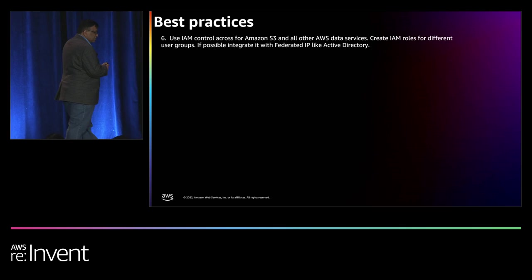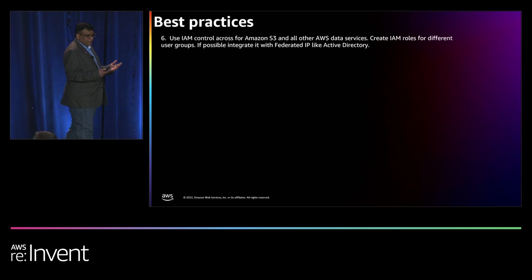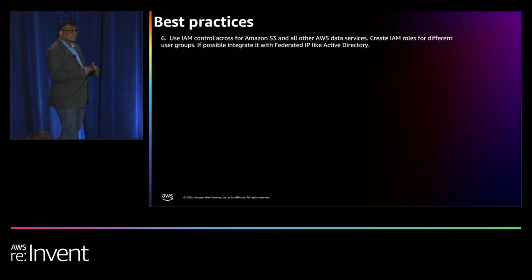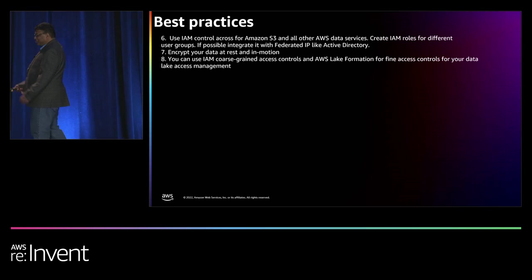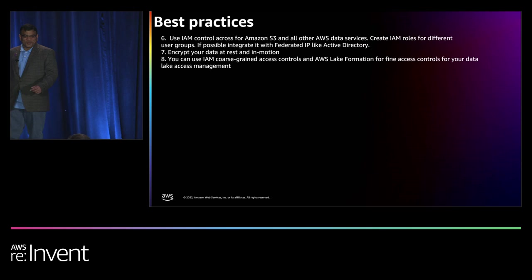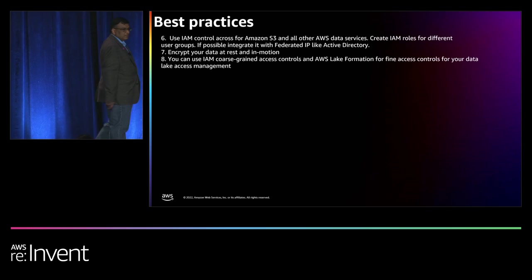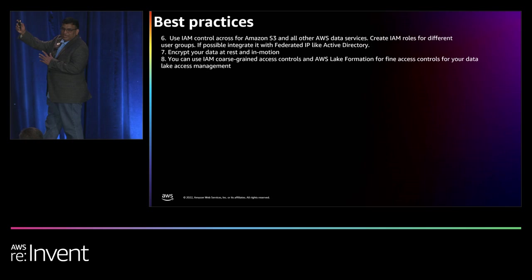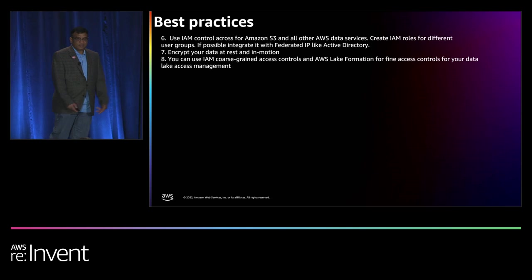In AWS, everything is zero-trust — Amazon EC2 cannot talk to Amazon S3 until you create a role or a policy. Always create IAM access controls for Amazon S3 and all AWS data services. Create IAM roles for different groups based on user personas. Encrypt your data at rest and in motion. Coarse-grained access controls: you can create IAM roles for all of your user personas — your personas could be support users for operational analytics or business users for business intelligence. Once you create those IAM roles, go to AWS Lake Formation to do fine-grained access control at the table level, database level, or column level.